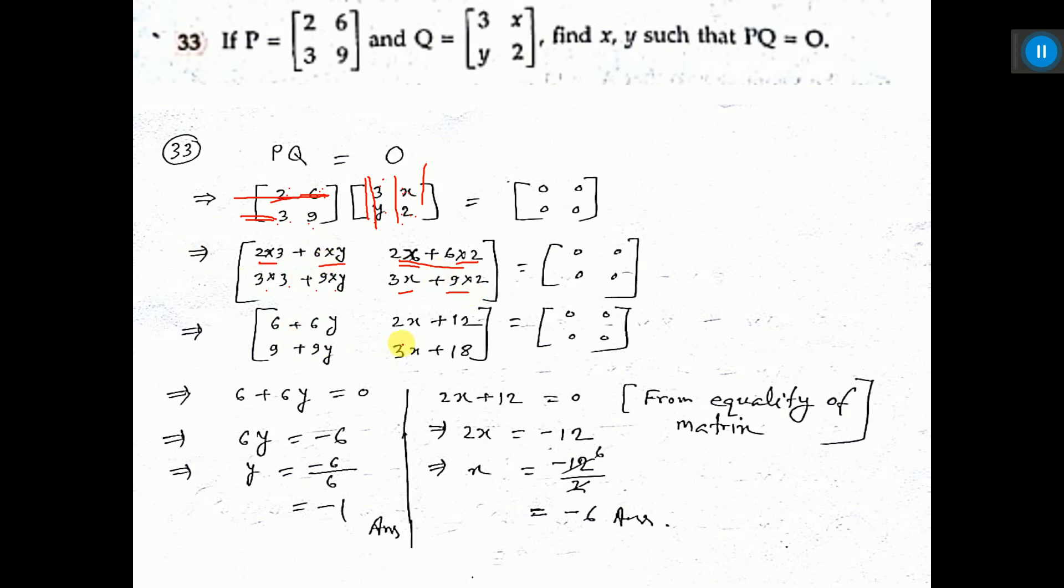Now this is simplification. From equality of matrices, this element corresponds to this element, so they are equal. 6X plus 6Y equal to 0. I have written from there, 6X plus 6Y equal to 0. This way you divide and cancel.